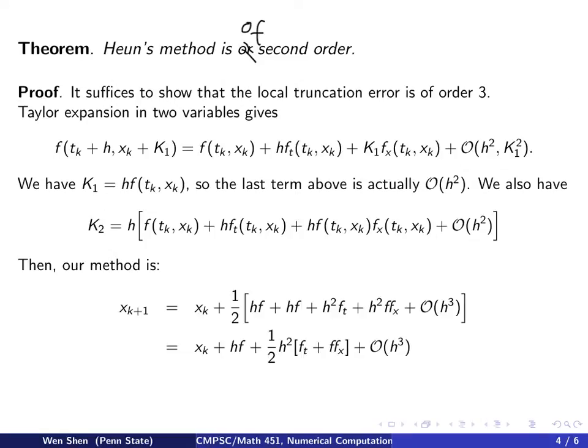Now we plug K1 and K2 into the Heun iteration and we see that xk plus 1 now equals to xk plus half of K1 plus K2 where K1 is just h times f. Everything here is evaluated at tk xk and we drop the dependence to make the notation shorter. So this first term here is just K1 and the rest here, these are actually just K2.